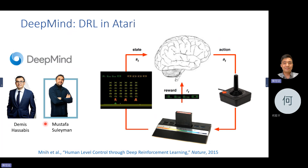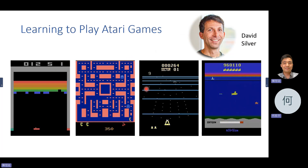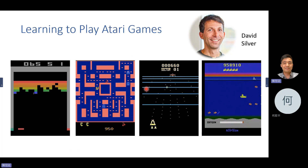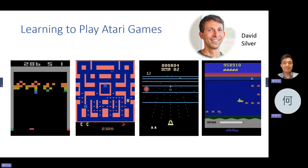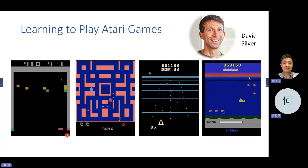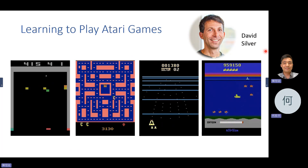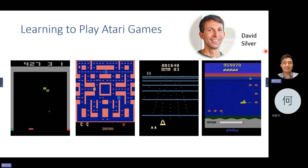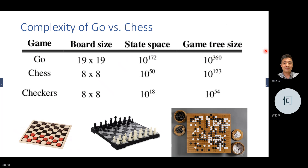Those founders had a background in video games — they had created video games. So they first trained a neural network to play Atari games, like shooting games. David Silver tried to train neural networks to play multiple games, imitating the human brain, using a single CNN to learn multiple games. They found a single neural network can beat humans in multiple different kinds of games. They published a paper in Nature.